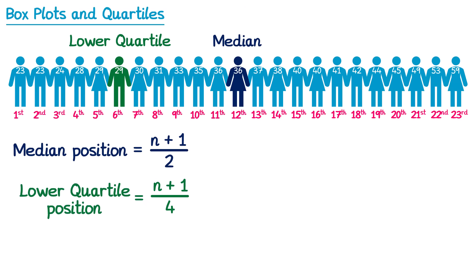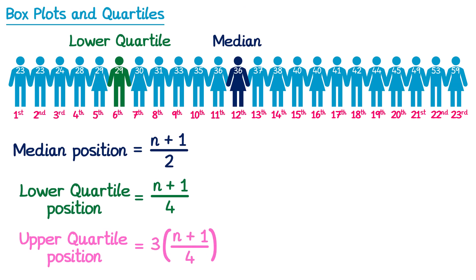Now since there's a lower quartile, there's also an upper quartile. The upper quartile is three quarters of the way through the data. To find the position of the upper quartile we multiply the position of the lower quartile by 3. So the lower quartile's position was n plus 1 over 4, and we multiply this by 3. So for this line with 23 people we would do 3 lots of 23 plus 1 divided by 4. 23 plus 1 is 24, divide that by 4 is 6, and multiply that by 3 gives you 18. So the person in the 18th position will be the upper quartile — that's this person here.